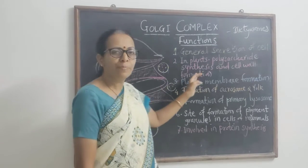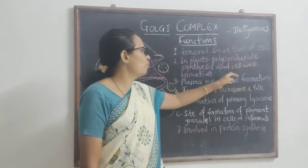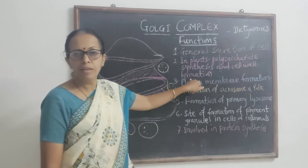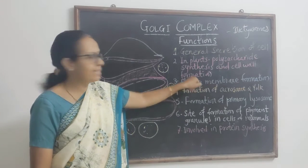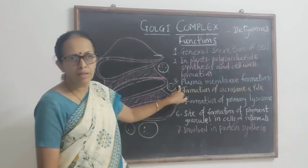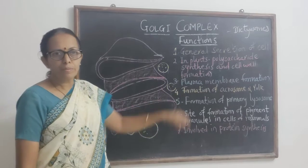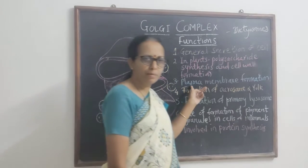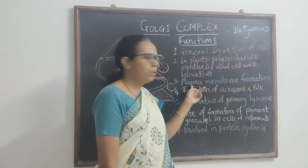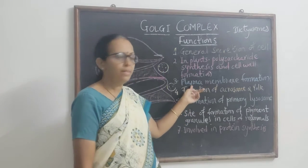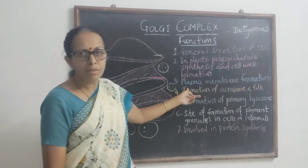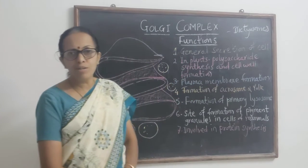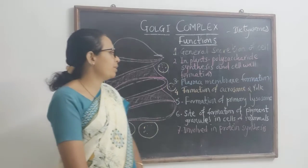Since cell walls are composed of the polysaccharide cellulose, the Golgi complex obviously has a role in cell wall formation in plant cells. The third function is in the formation of the plasma membrane — the lipoproteinaceous membrane formation is aided by the Golgi complex.